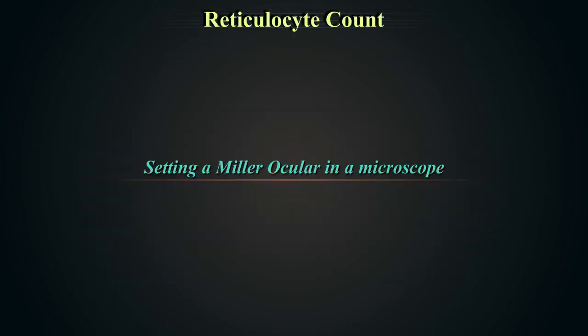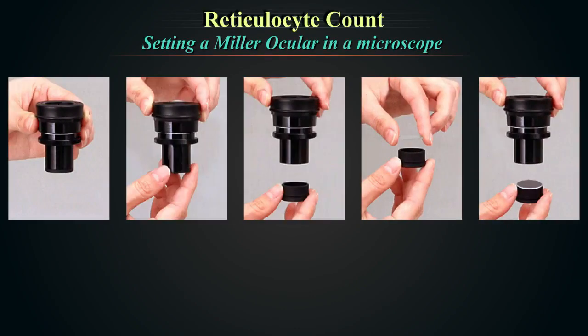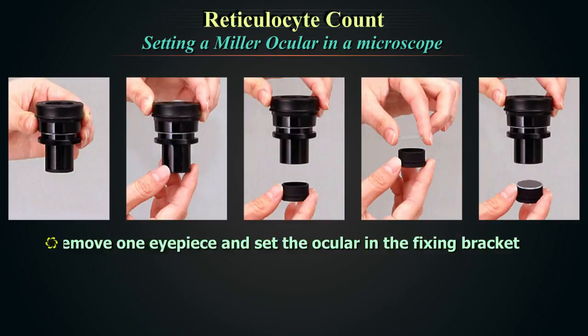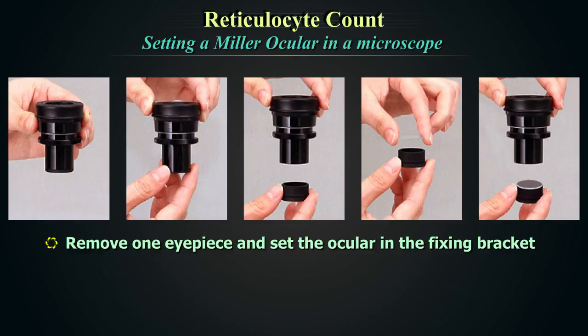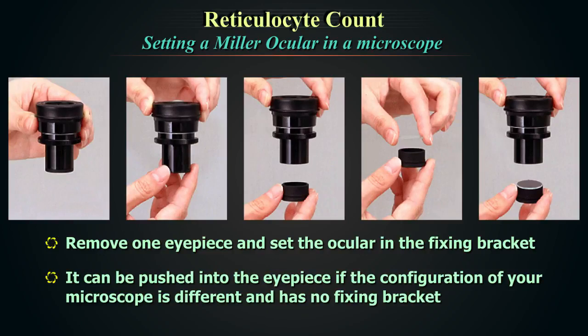To set up a Miller's ocular in a microscope: remove one eyepiece and set the ocular in the fixing bracket. Turn the end of the eyepiece counter-clockwise and remove the fixing bracket for the micrometer. Place the micrometer on the fixing bracket with the printed surface down and insert into the eyepiece. Note that there may be differences between makers and models; you may use just one eyepiece.